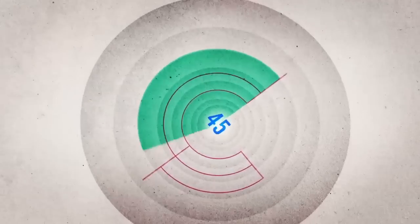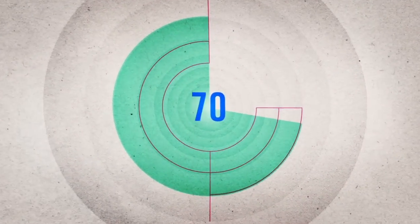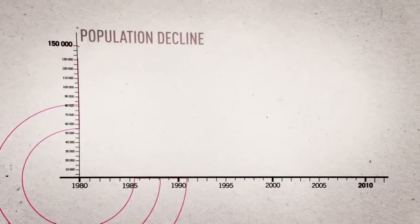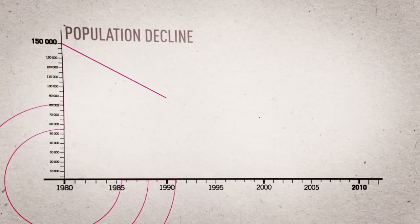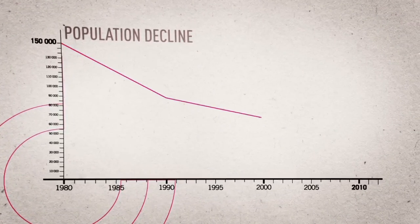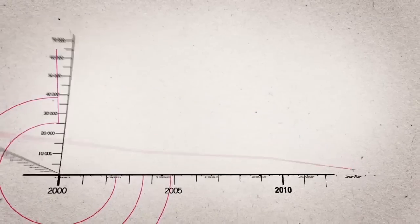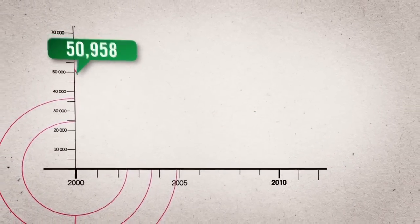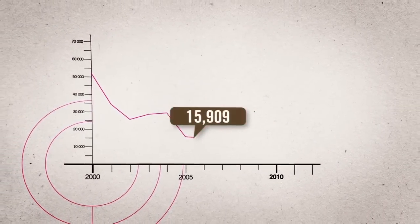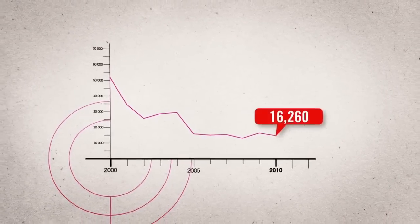The Red Knot Rufa population has dropped by 70% since the year 2000. Of the 53,000 birds estimated in 2000, only 16,000 remained by 2010.